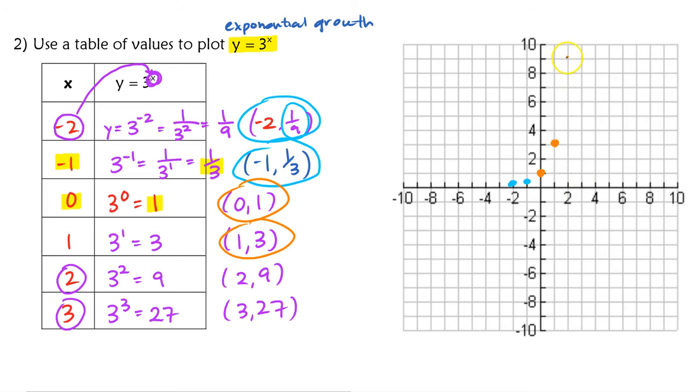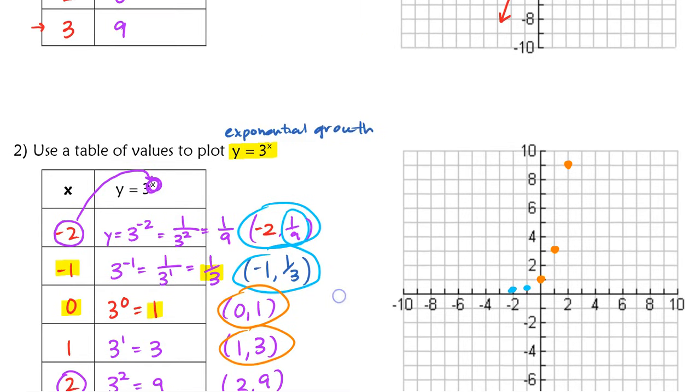2, 9 is all the way up here. And then we have this next point, 3, 27. Obviously, 3, 27 is way off this graph, so I'm just going to kind of put it somewhere up here. So obviously that's not exactly where 27 would be, but it gives me the idea that that point is going to be way off this graph.